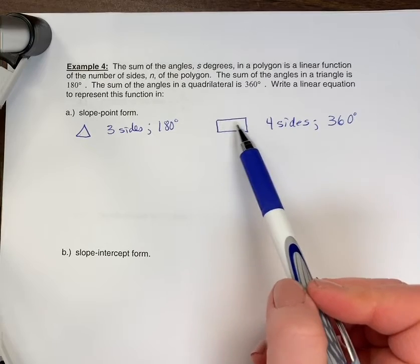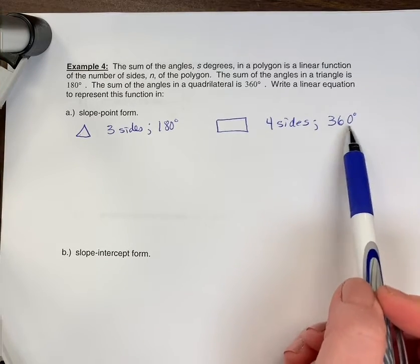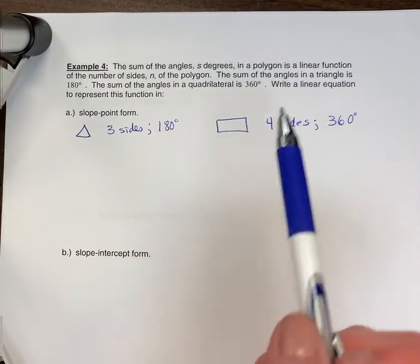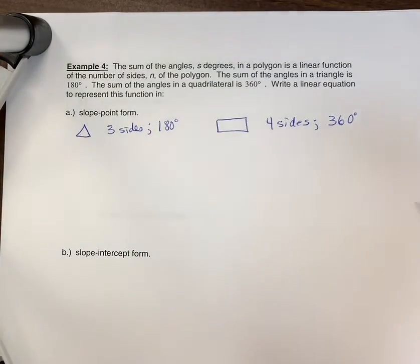So the angles, so this would be 90, 90, 90, 90, adds to 360. All of the sums of the angles in, and this again assuming it's a rectangle, but they will always add to 360 if it's four sides.